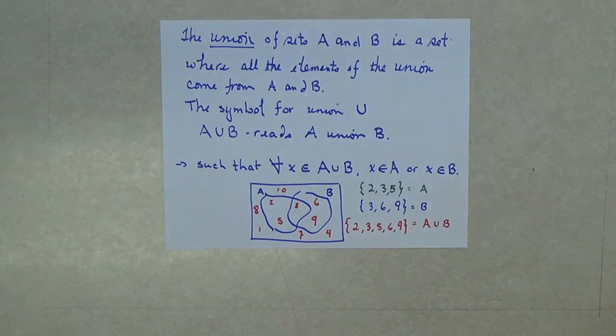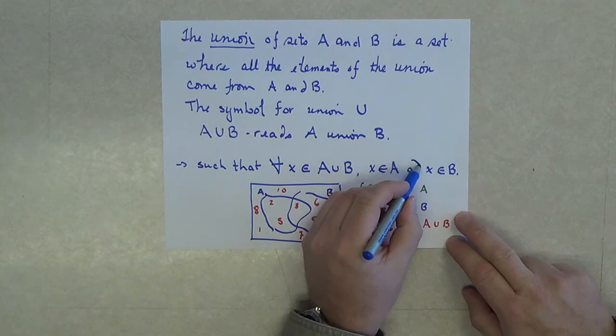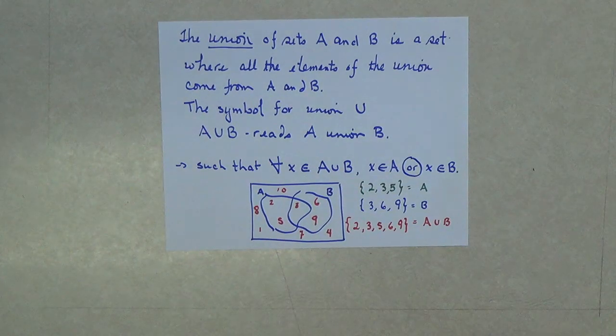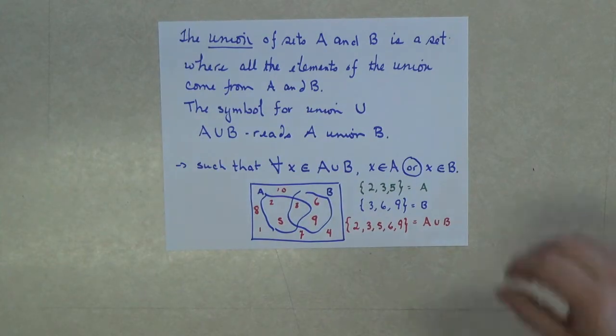The thing to note with this definition is this word right here, the conjunction OR. In mathematics, the word OR is an inclusive OR. I can belong to one or the other, it does not have to be both.